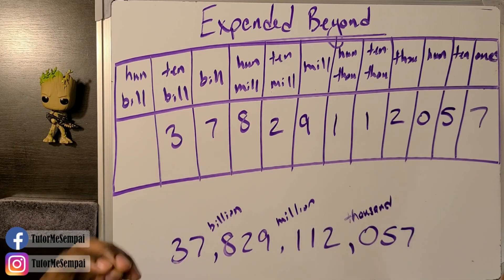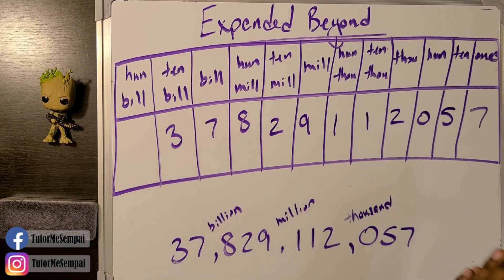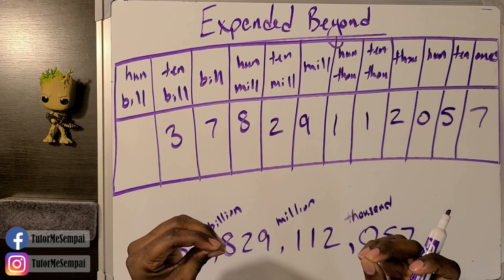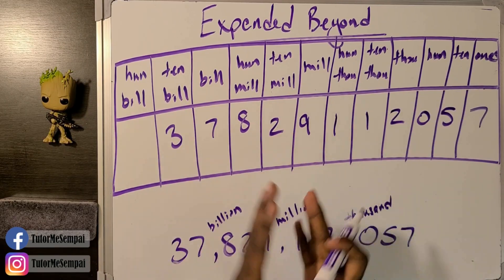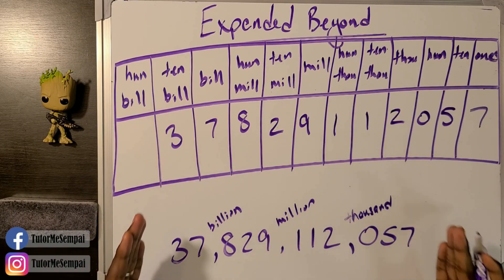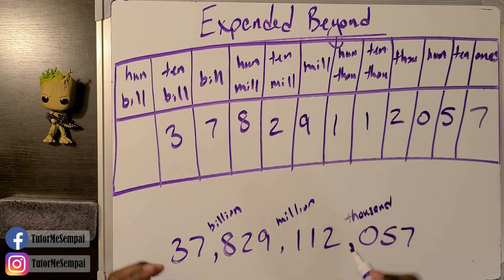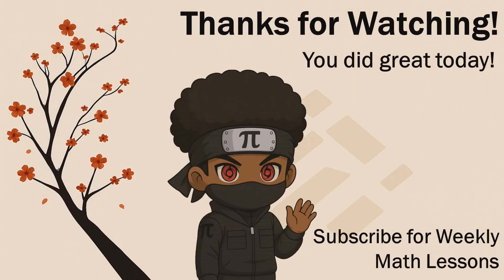Filling in a place value chart is really rather simple — all you have to do is write your number as it is. But understanding the place value chart takes it to the next level, bringing a deeper understanding of what each individual digit truly represents. Thank you for watching — if you learned something today, be sure to leave a like and hit subscribe. See you next week!